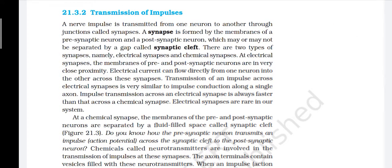A nerve impulse is transmitted from one neuron to another through junctions called synapses. A synapse is formed by the membrane of a pre-synaptic neuron and a post-synaptic neuron which may or may not be separated by a gap called the synaptic cleft. There are two types of synapses: electrical synapses and chemical synapses. In electrical synapses, the membranes of pre- and post-synaptic neurons are in very close proximity and electrical current can flow directly from one neuron to the other. Transmission across electrical synapses is faster than across chemical synapses. Electrical synapses are rare in our system.